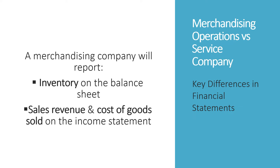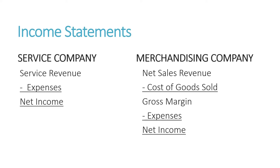In terms of the differences between a merchandising and a service company's financial statements, a merchandising company is going to report inventory on the balance sheet. Inventory are the goods that are purchased for resale. And on the income statement, they'll be reporting sales revenue and cost of goods sold. A service company's income statement has service revenue minus expenses equal net income. For a merchandising company, cost of goods sold is broken out so that we have net sales revenue minus cost of goods sold, giving a subtotal known as gross margin. We then subtract out the rest of the expenses to come down to net income.